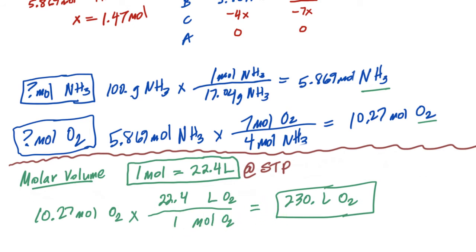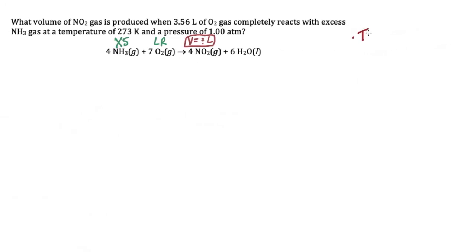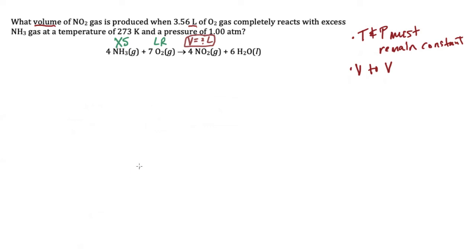For the third method we need a different problem because the conditions must be different. The third method tends to be the easiest but also the most conditional. The first requirement is that temperature and pressure must remain constant throughout the problem. The second requirement is that you must be converting volume to volume — gas to gas. You need both criteria met for this method to work.